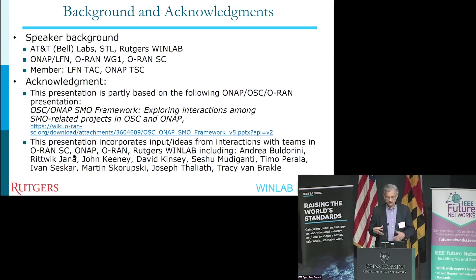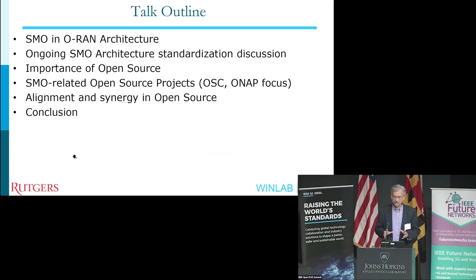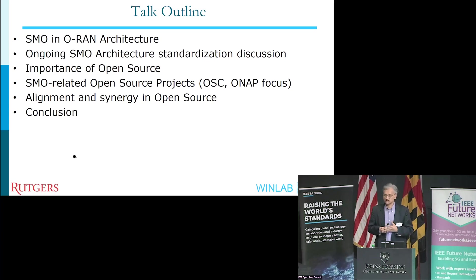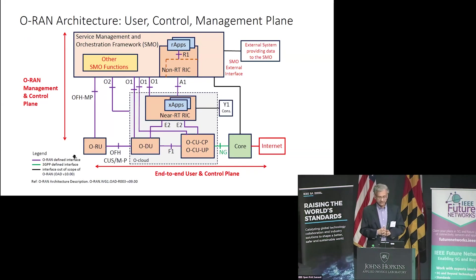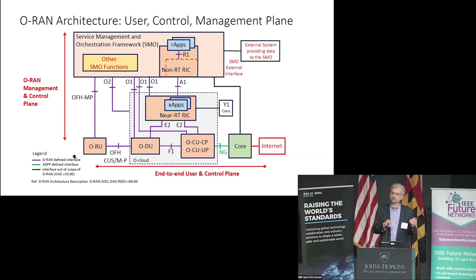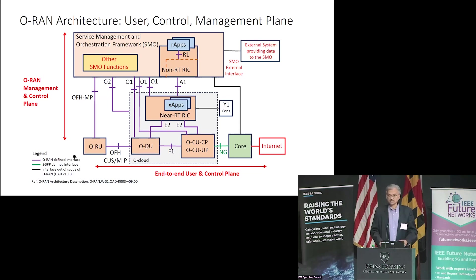The second part of this talk is partly based on work I've been doing to bring more synergy and collaboration between open source efforts. The talk outline is in two parts. On the horizontal red line you're seeing is the end-to-end user plane and control plane going from a UE attached to an RU, through the DU, CU, core, to the internet — and most of it is based on 3GPP.